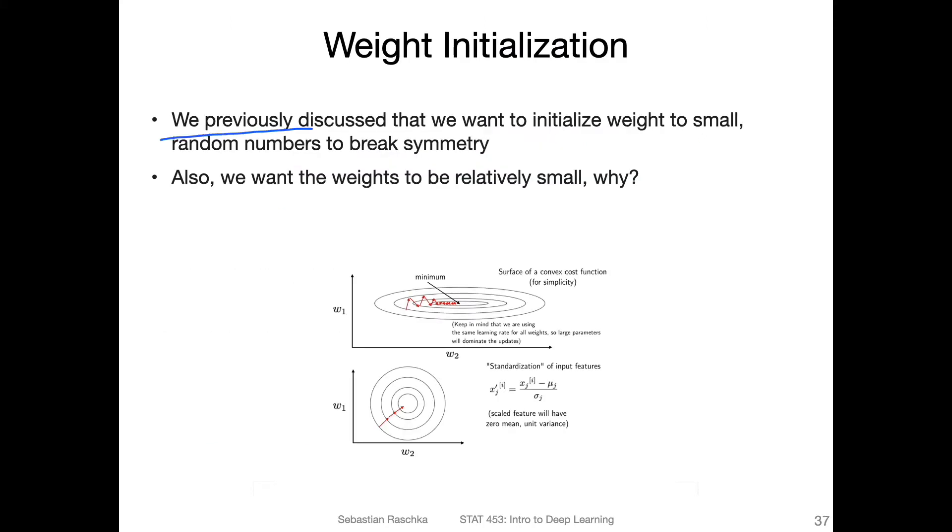Previously, we discussed that we want to initialize weights to small random numbers to break symmetry in the multilayer perceptron. I gave it to you as a question to think about. We discussed this on Piazza. But besides having small random numbers to break the symmetry, we also want the weights to be relatively small.